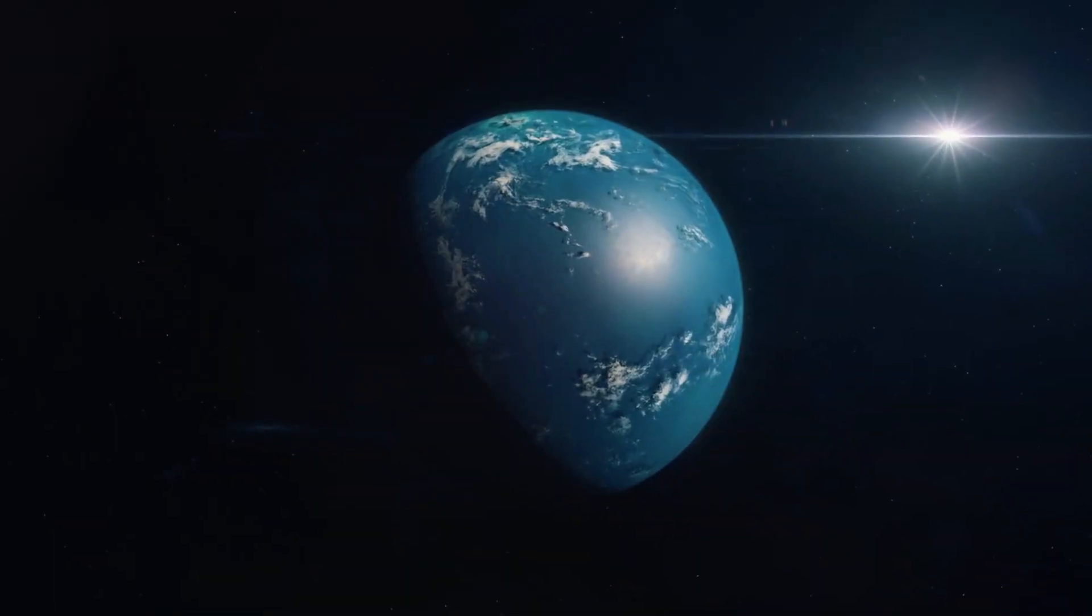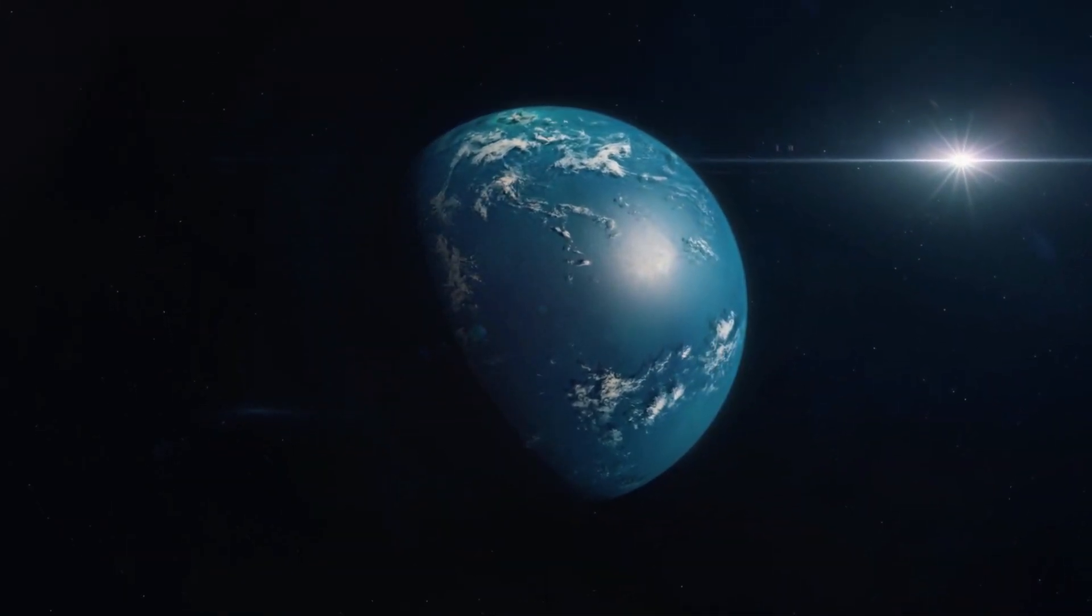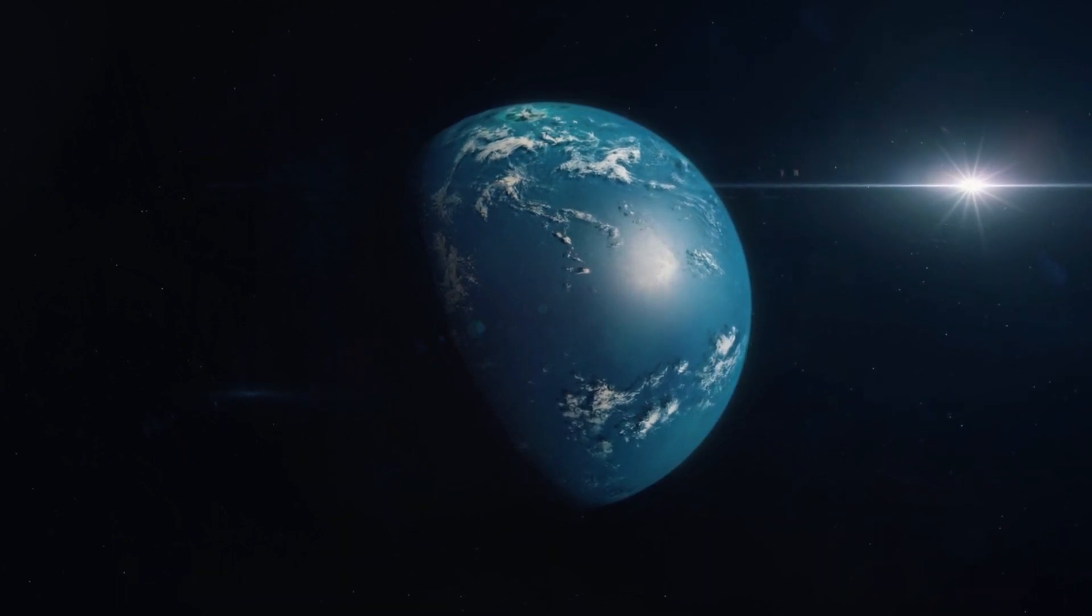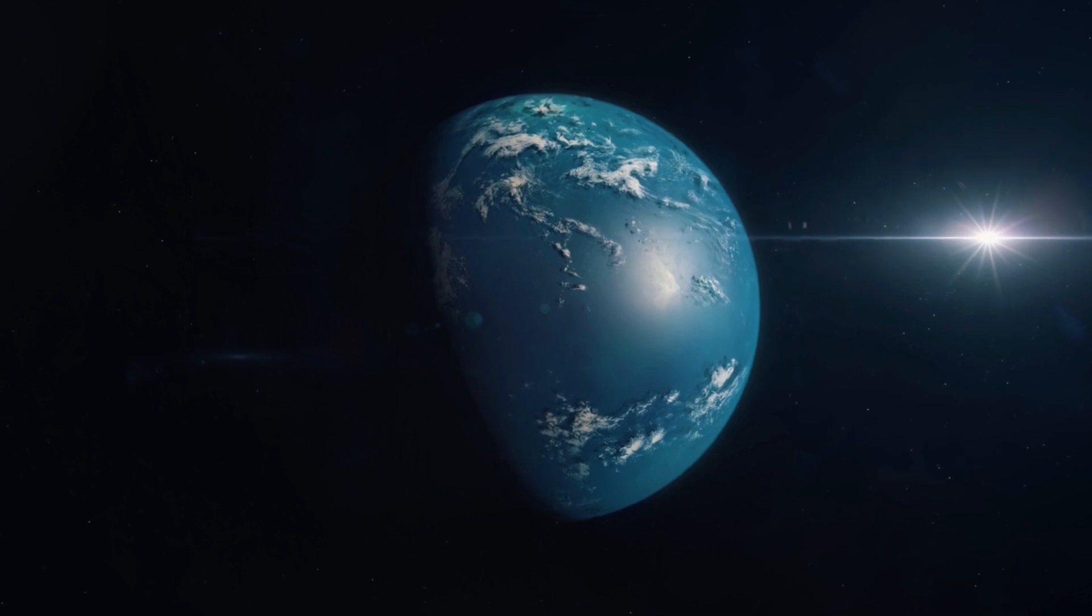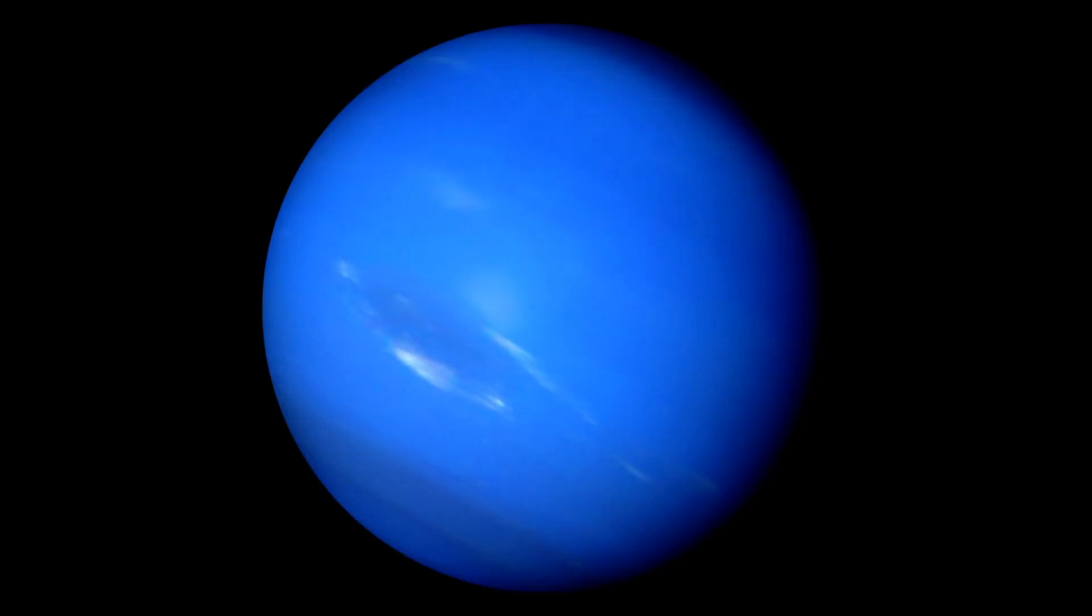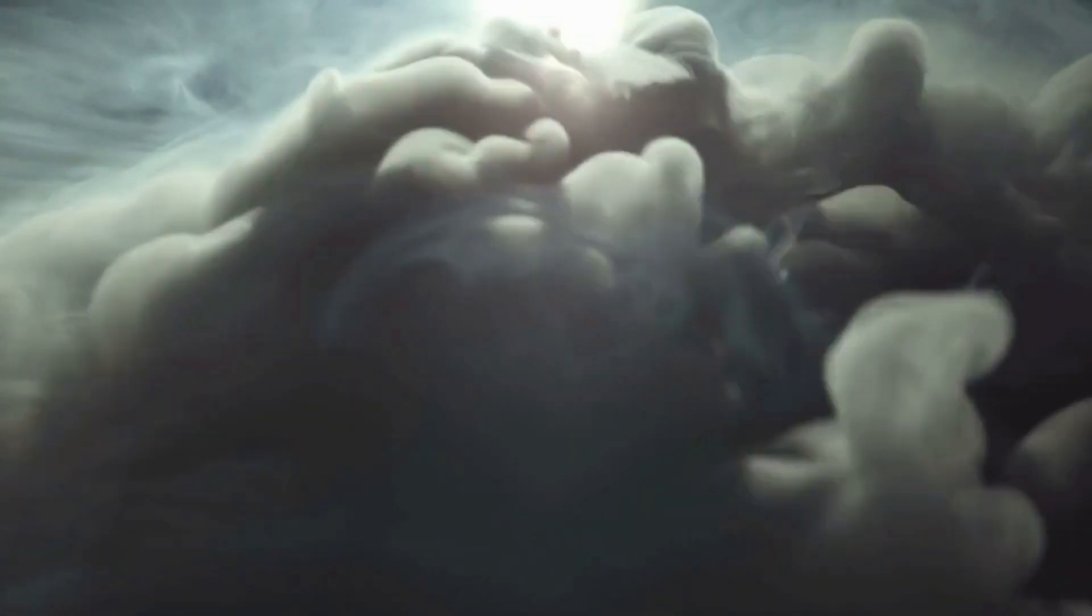In 2019, the presence of water vapor in K2-18b's atmosphere was discovered, drawing attention to the system. K2-18b has been studied as a potential habitable world that resembles more a gas planet like Uranus or Neptune than Earth. Think less Earth and more mini-Neptune.